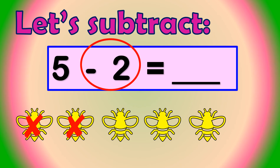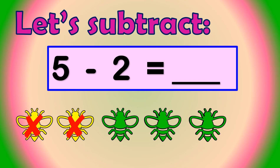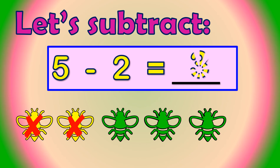Now let's count how many flies are left: 1, 2, 3. 3 flies. Therefore, 5 minus 2 equals 3.